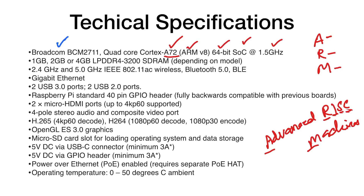It is a 64-bit system-on-chip running at a clock frequency of 1.5 GHz. It has 1 GB, 2 GB, and 4 GB LPDDR4 RAM running at 3200 MHz. This is the latest DDR4 standard, and even some desktops or laptops today still use DDR3, making the Raspberry Pi very affordable for what it offers.